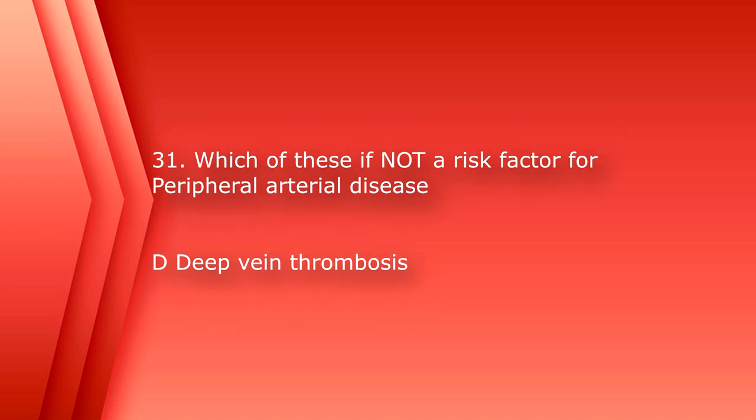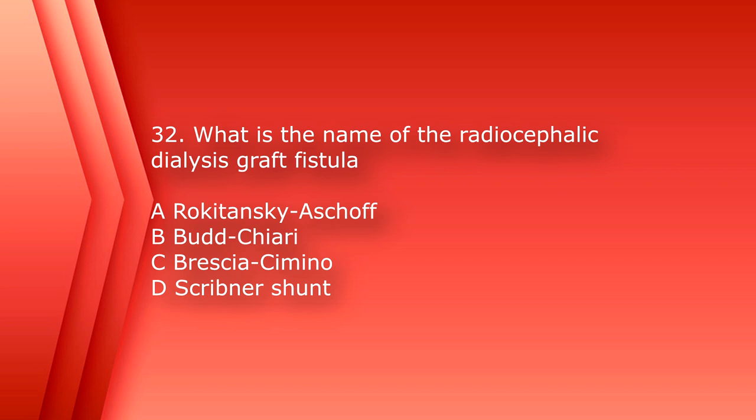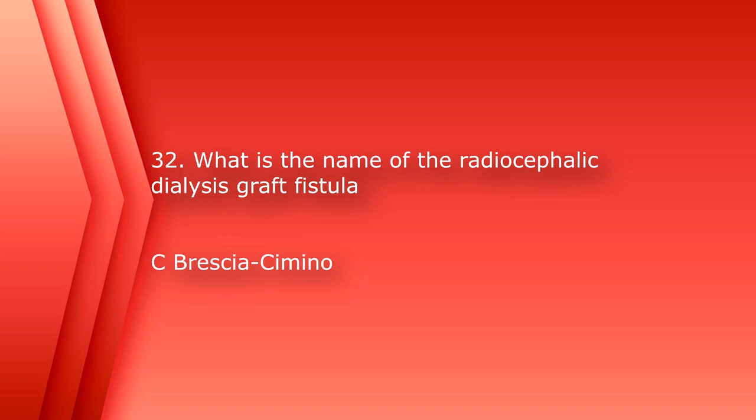Number 32: what is the name of the radiocephalic dialysis graft fistula? A. Rokitansky-Ashoff, B. Budd-Chiari, C. Brescia-Cimino, or D. Scribner-Shunt. The answer is C, Brescia-Cimino.